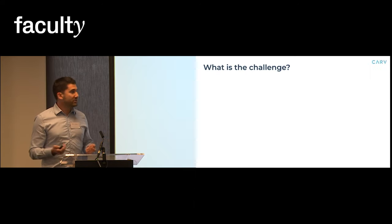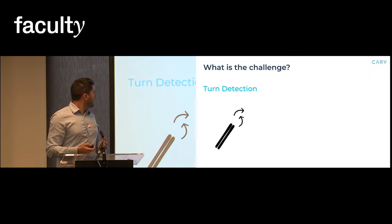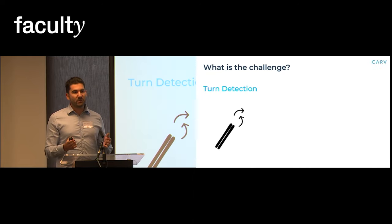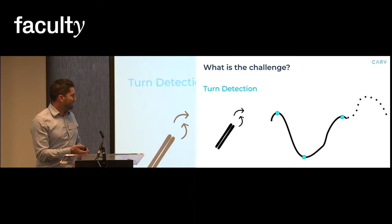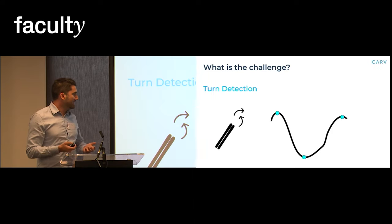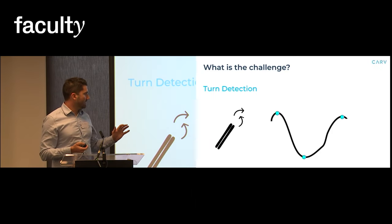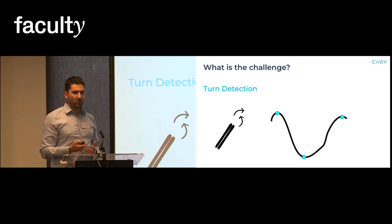However there is one challenge. The CARV technology currently uses the horizontal rotation of the skis to determine when the turn is happening. The black line you see here, this is the rotation data you observe.